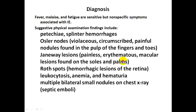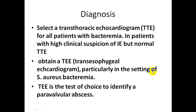Suggestive findings include: new cardiac murmur, new onset of heart failure, conduction abnormalities on ECG suggesting periannular abscess, focal neurological signs, septic emboli, splenomegaly, petechiae, splinter hemorrhages, Osler nodes (violaceous purple circumscribed painful nodules on the pulp of fingers and toes), Janeway lesions (painless erythematous macular lesions on the sole and palm), Roth spots (hemorrhagic retinal lesions), leukocytosis, anemia, microscopic hematuria, and multiple bilateral small nodules on chest X-ray from septic emboli.